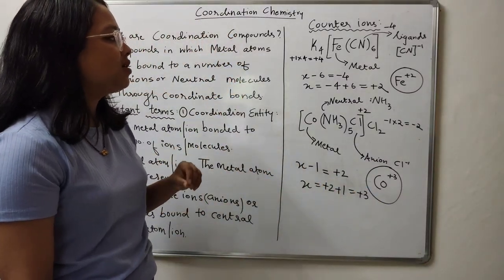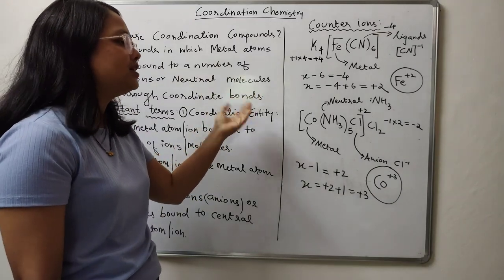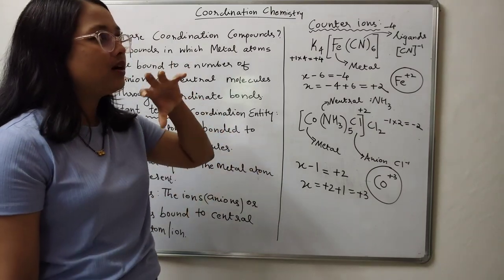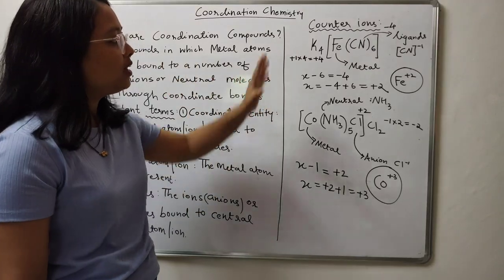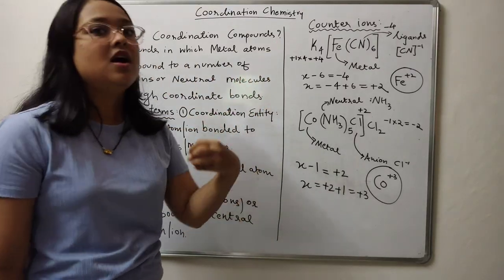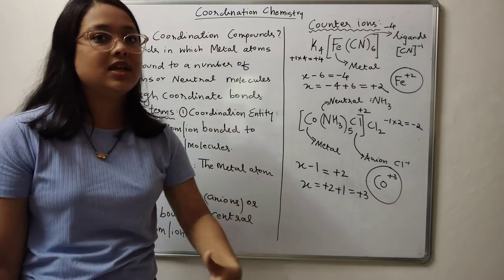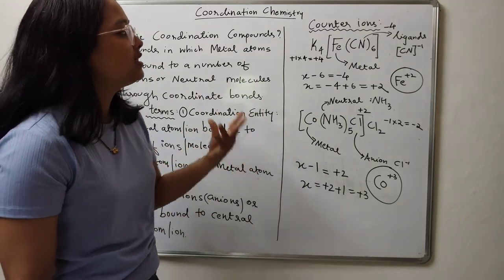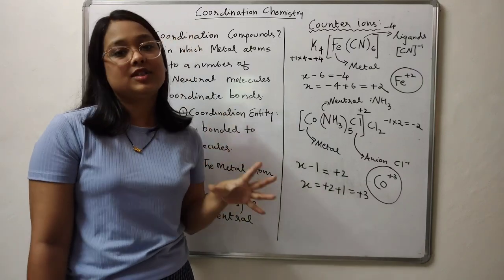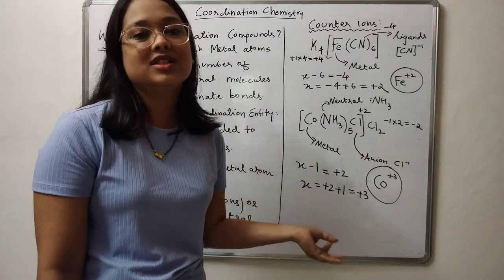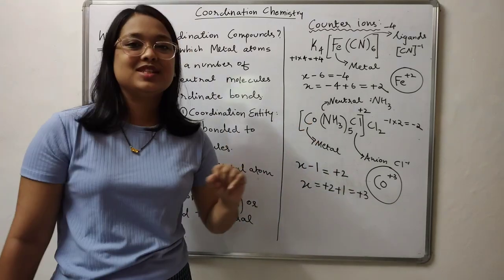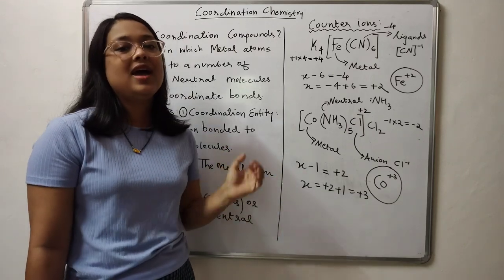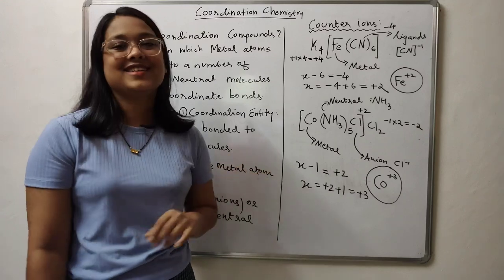This is how you calculate oxidation states by making use of counter ions. In most cases counter ions are present, but even without them, by knowing the type of ligands — whether neutral or anionic, and what charge they carry — you can calculate the charge of your central metal atom. Transition metals show variable oxidation states, which is their key speciality. I hope this video was helpful. Please give it a thumbs up and subscribe to S-Chemistry for more such content. Thank you and bye-bye.